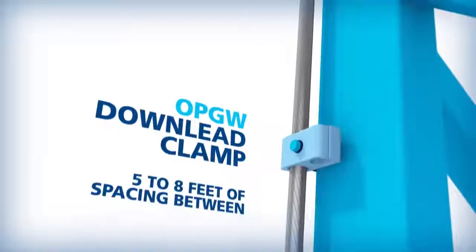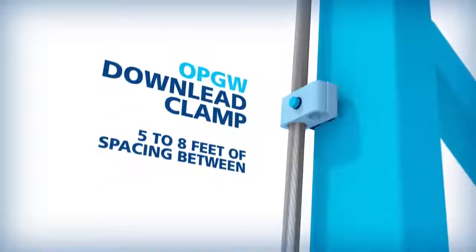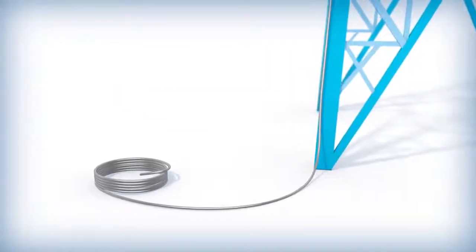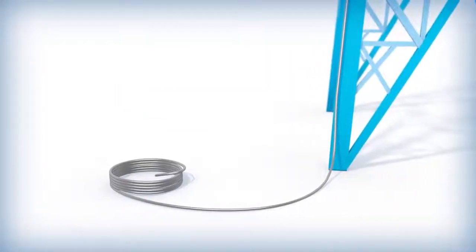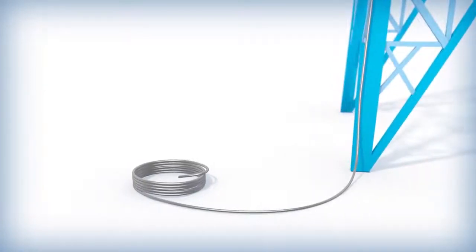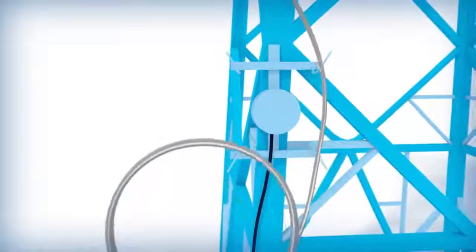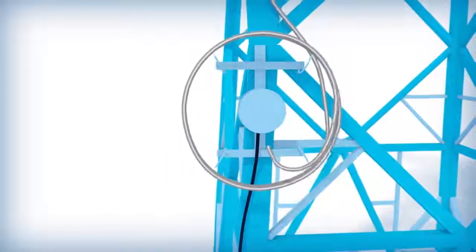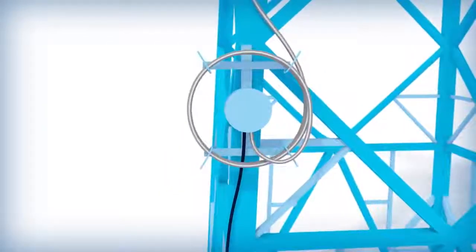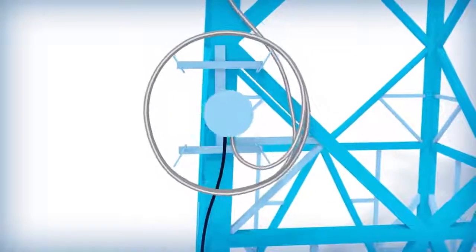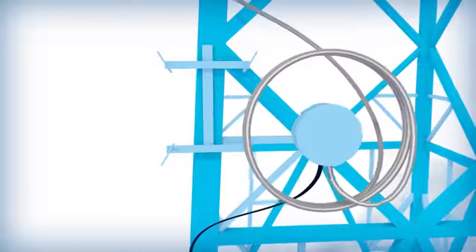The OPGW is trained down the structure using down-lead clamps. In order to provide enough cable for splicing, the OPGW should extend beyond the bottom of the structure and be looped in coils for storage. To prevent damage, the coil should be fixed on the structure at the splice enclosure location. For future splicing and or maintenance, the splice enclosure may be removed from the structure and brought to ground.